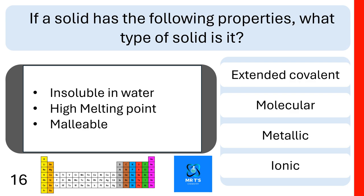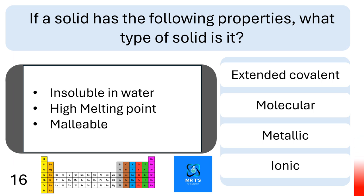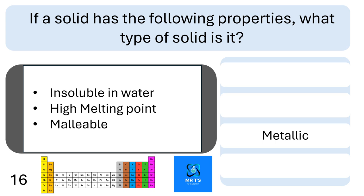Question sixteen: if a solid has the following properties — insoluble in water, high melting point, and is malleable — what type of solid is it? Is it extended covalent, molecular, metallic, or ionic? This is a metallic solid.